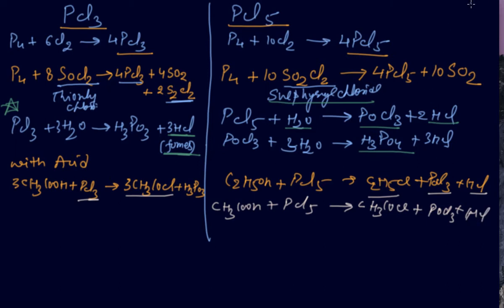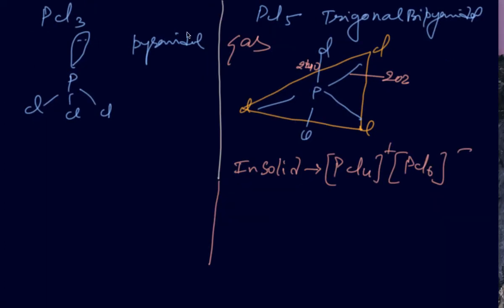Structure of PCl3 and PCl5. Yes, students, PCl3 is pyramidal having one lone pair. But in PCl5 there are two phases. In the gas phase it is trigonal bipyramidal and the axial bond length is 240 picometers.